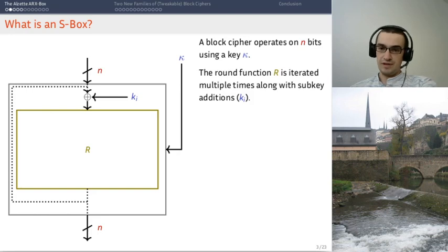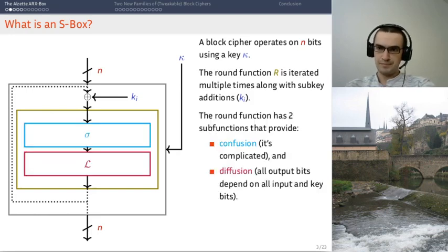The round function itself needs to have several properties. This was the findings of Claude Shannon. In a block cipher you need to have confusion and diffusion. These two properties, you also need to have them at the level of the round function to a lesser extent. And then by iterating this round function, you get the property that you need for the full cipher.